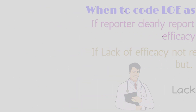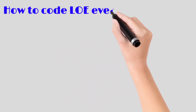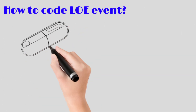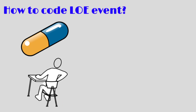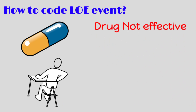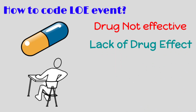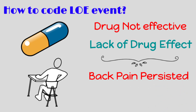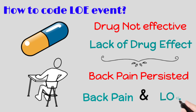Now let's discuss how to code a lack of efficacy event. If a patient took medication for the treatment of back pain and the only event reported was that the drug was not effective, in such a scenario we only code the event as 'lack of drug effect.' Another scenario is if the patient took medication for back pain but it was explicitly mentioned that the back pain persisted after taking the drug. In such a scenario we code two events: first is back pain, which is the indication of the drug, and second is lack of drug effect.